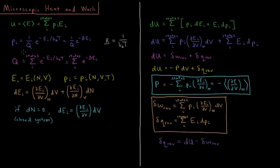The partition function is the sum over all states of their Boltzmann factors: e to the minus energy of that state divided by Boltzmann constant times temperature, or equivalently the sum over all states of e to the minus beta·Ei.